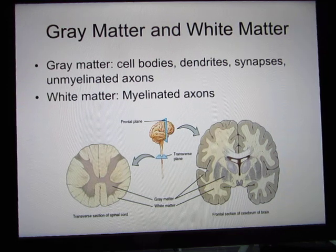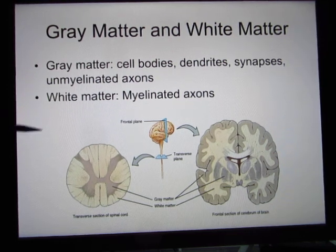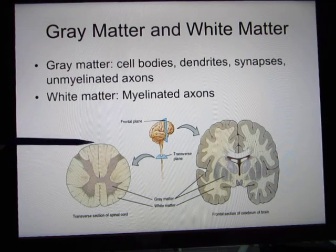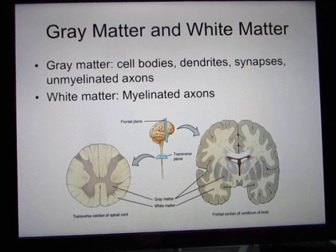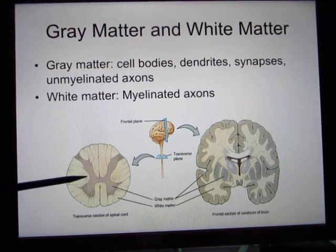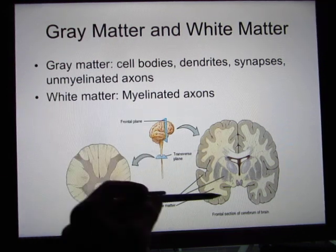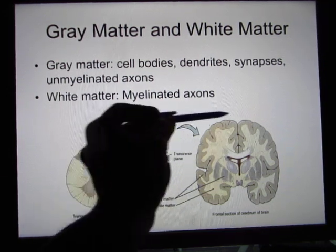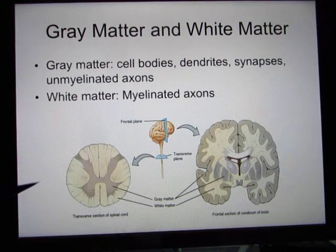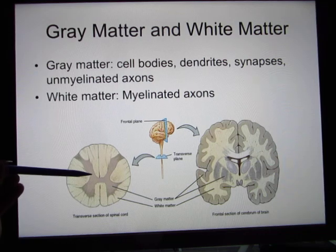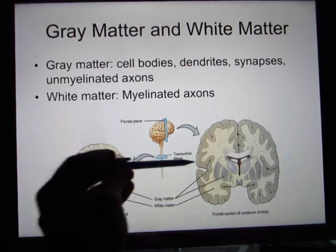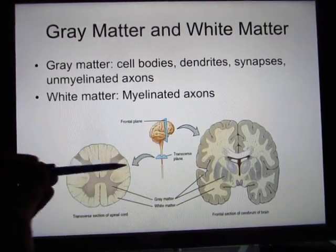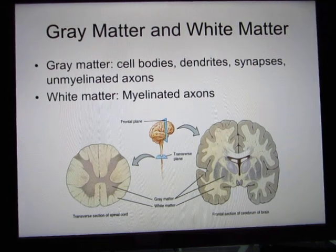The central nervous system is organized into gray matter and white matter. Gray matter is where the cell bodies are located — in the spinal cord the center is gray, and in the brain the outer cortex is gray. White matter consists of myelinated axons — in the spinal cord the outside is white, and in the brain the inside is white.